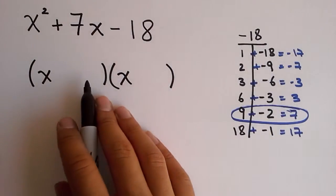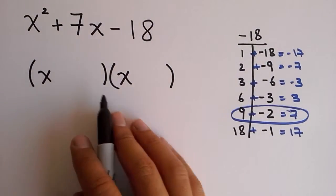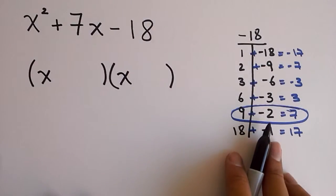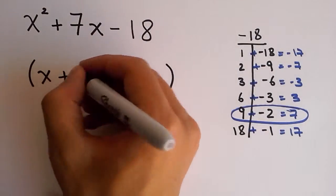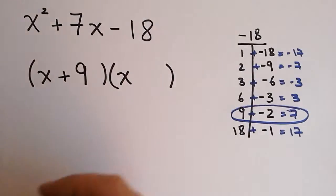Once again, the numbers that you copy here go exactly with the signs that you found here in your factor table. That means you have one parenthesis that is plus 9, and another parenthesis that is negative 2.